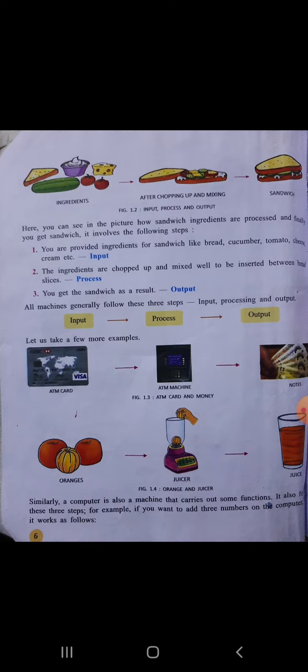So it's a process — work is done on the ingredients; they are chopped up and mixed for making the sandwich, so it is called process. Third, you get the sandwich as a result — so it is called output. Work is done on the ingredients and you get the sandwich as the final result, so it is called output.